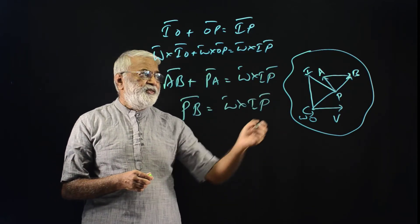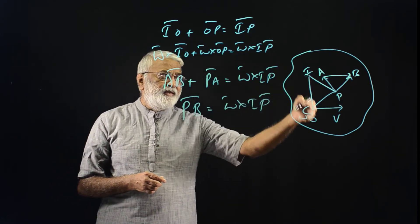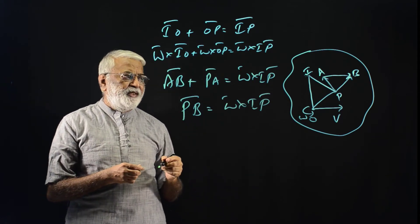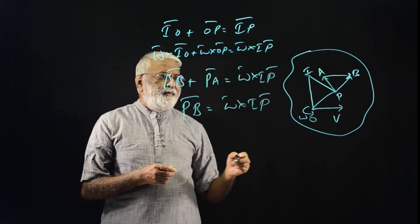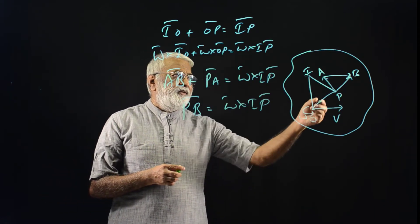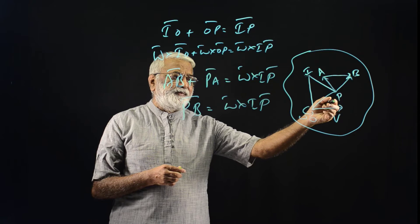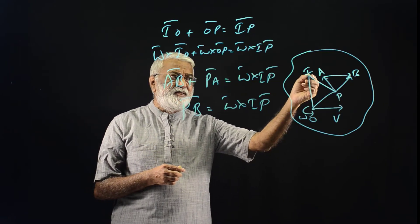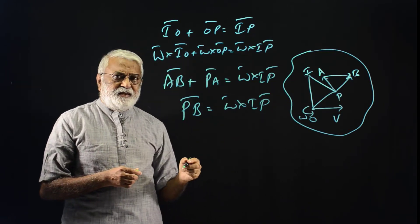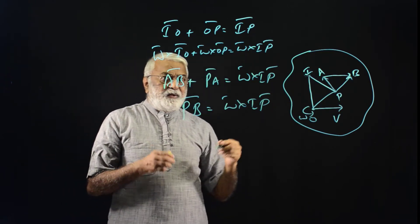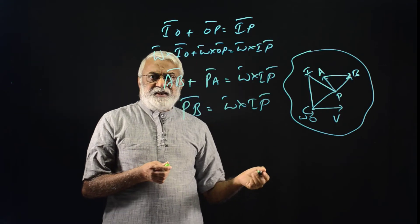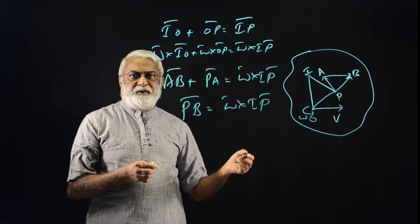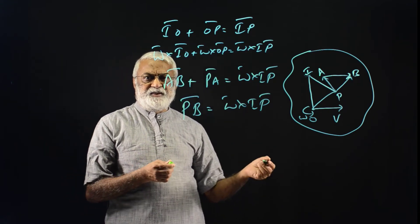That's it. The velocity of any point P on a body in combined translation plus rotation can be expressed as Omega bar cross the distance of that point from the instantaneous axis. Now, how do we find the instantaneous axis?